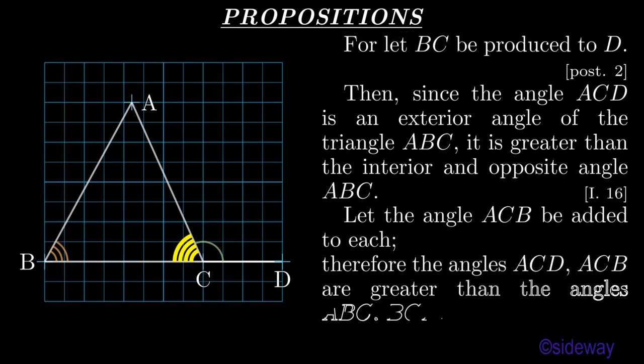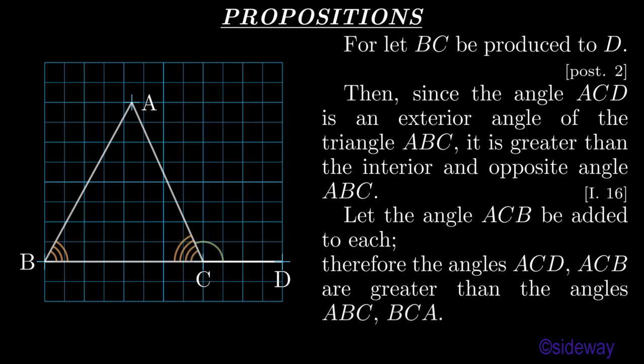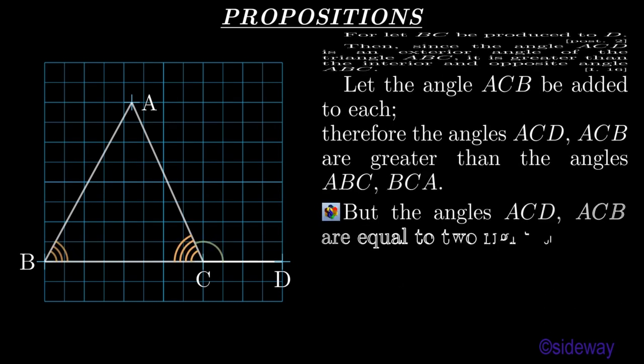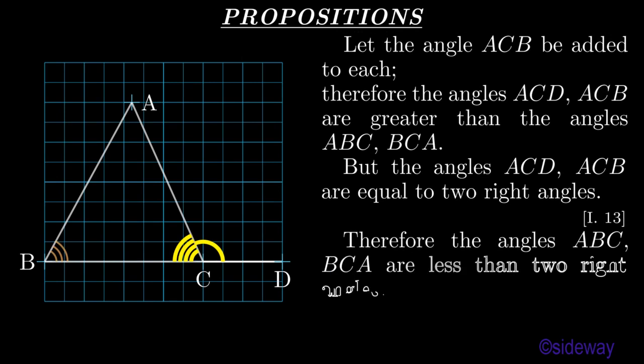Let the angle ACB be added to each. Therefore the angles ACD, ACB are greater than the angles ABC, BCA. But the angles ACD, ACB are equal to two right angles, by Book 1 Proposition 13.